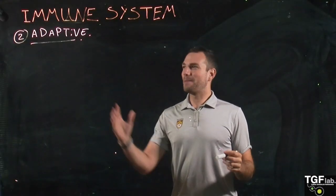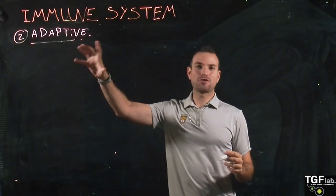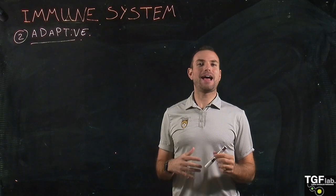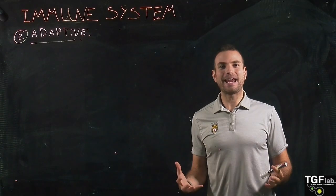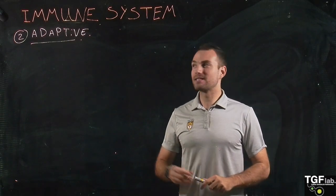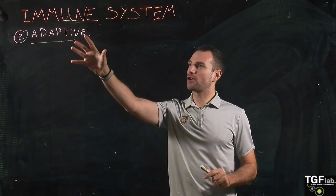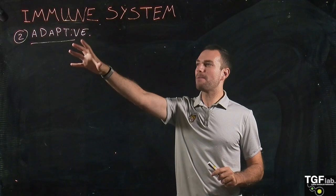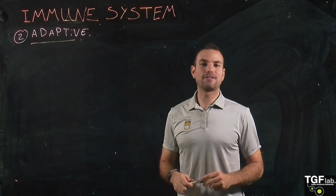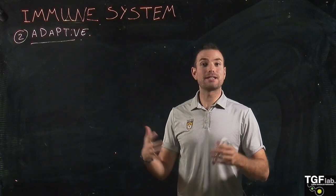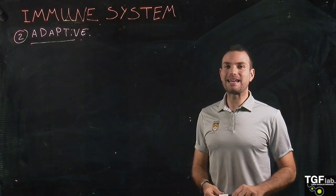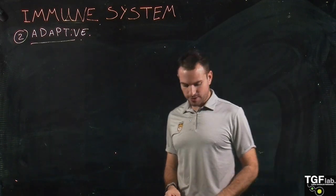Hi everyone, welcome back. After looking at the different processes that happen in the innate immune response, now we're going to see what happens in the adaptive immune response — what is going to happen after the innate immune response.